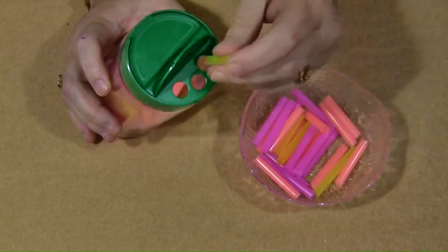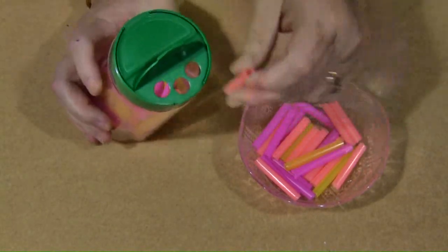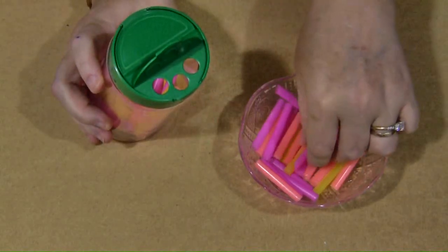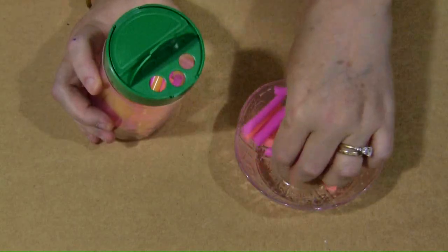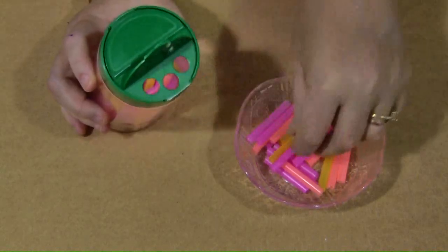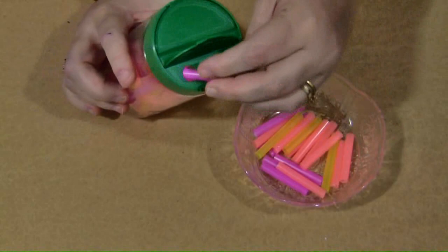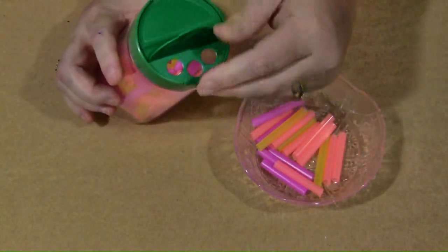So they just fill up the whole container, use all the straws, and then after that they can empty it out. You can certainly sort by colors after they're emptied, you can sort by size, you can count the number of straws that were put in. So there's quite a few extension activities you can do with this. It doesn't just have to be a fine motor development activity, but it's a good fine motor development activity.